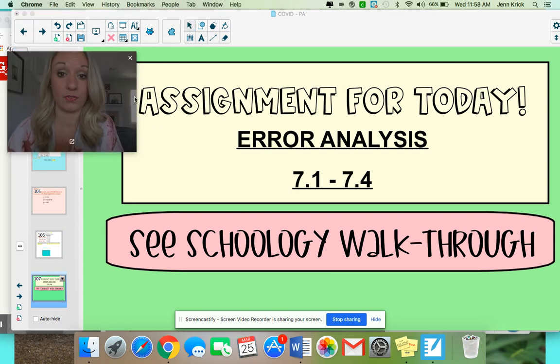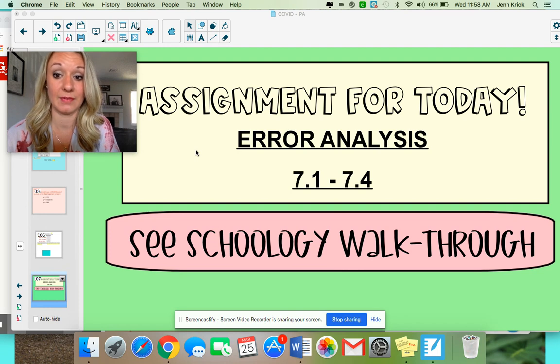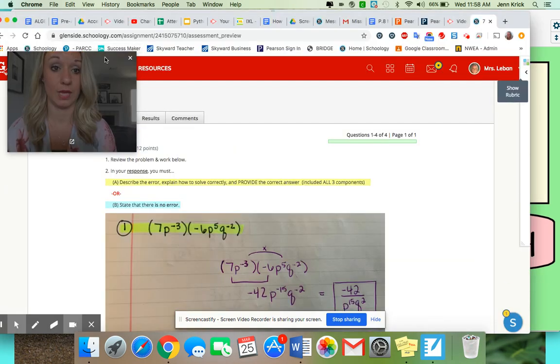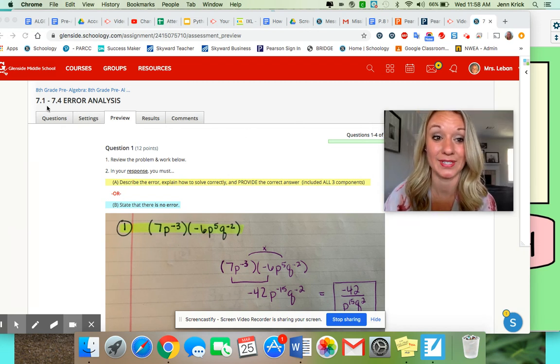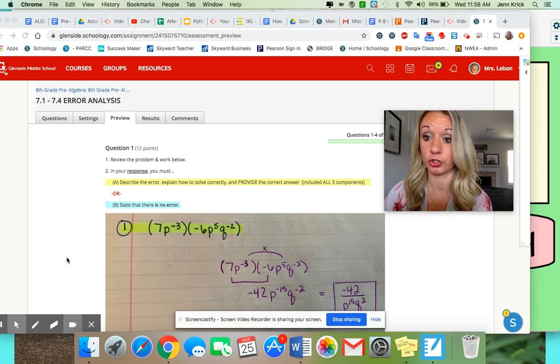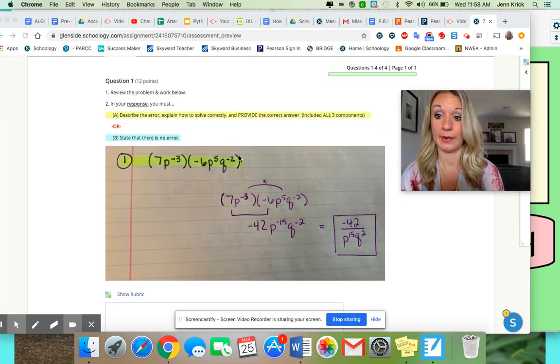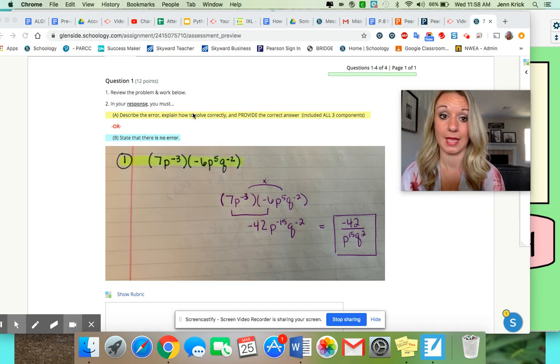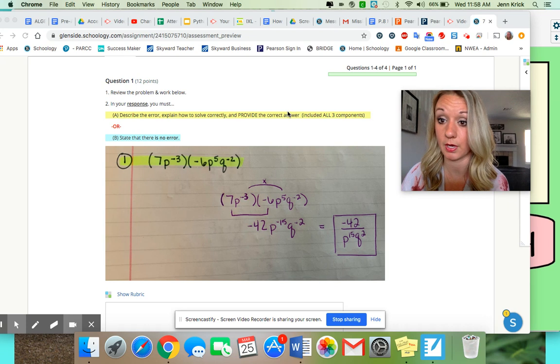So now let's talk about your assignment for today. It is on Schoology. It is an error analysis task for property 7.1 through 7.4. So let's take a look at that together. So notice that I'm on the correct assignment. That's step number one, 7.1 through 7.4. These are all short answer. There's only four questions and it's worth 48 points. So here's what it will look like for question one. Step one, you need to review the problem. The problem is always highlighted in yellow in the work. You need to either describe the error, explain how to solve correctly and provide the correct answer. And yes, you need all three components or you need to state that there is no error.